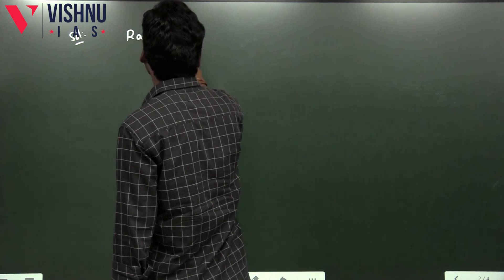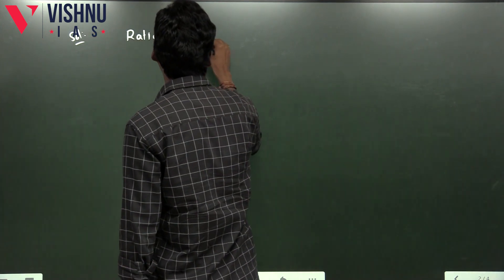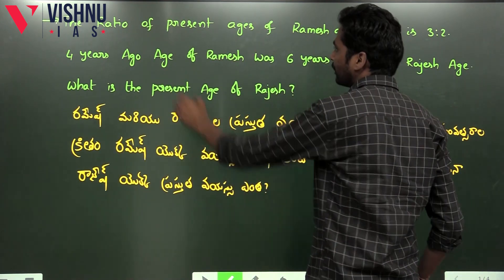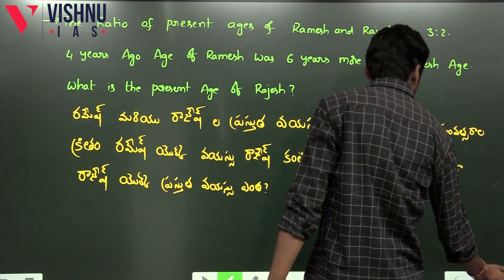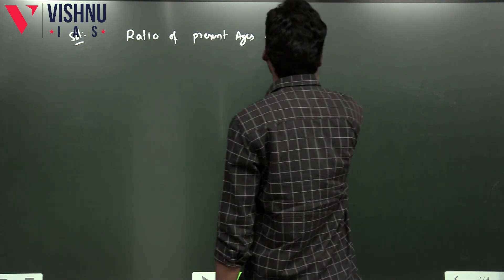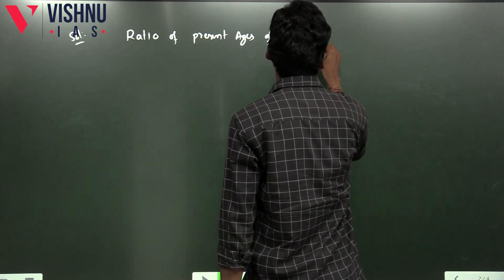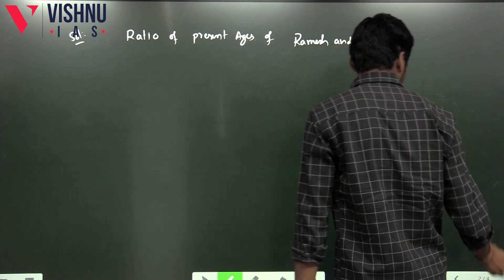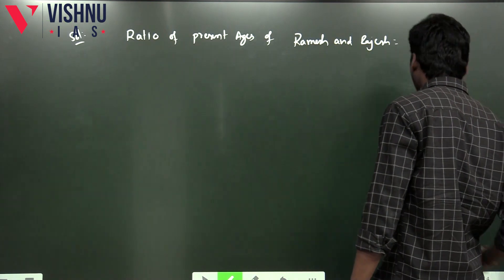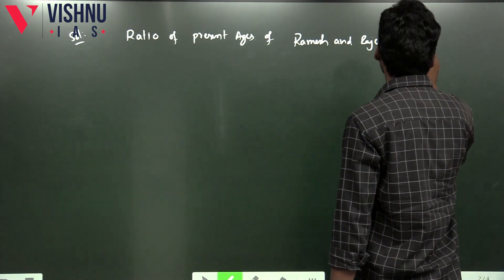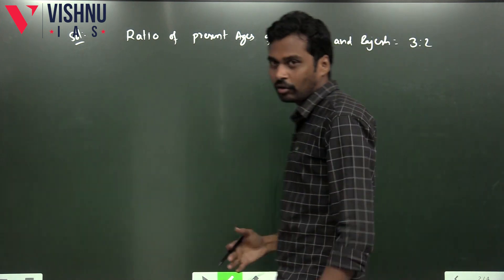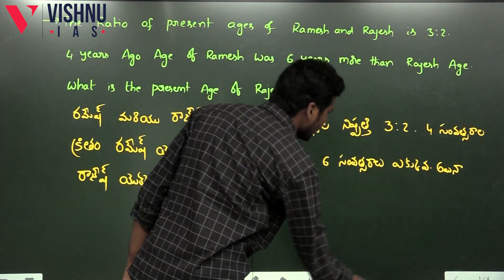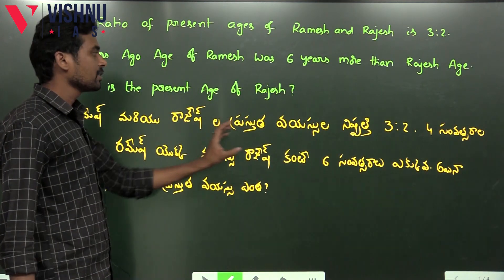The ratio of present ages of Ramesh and Rajesh is 3 to 2. So it will be written like this. If you look at the data: Ramesh, Rajesh — the ratio is 3 is to 2.